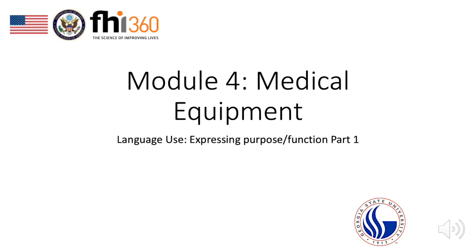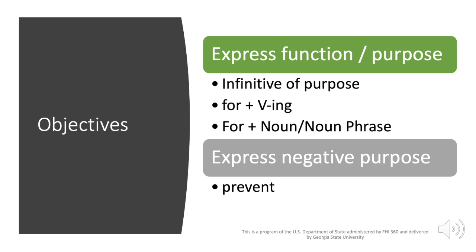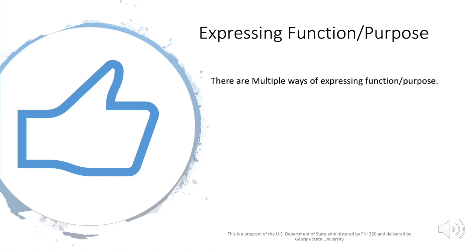Hello again. After learning about different medical equipment and instruments, let's see how you can express their functions. We want you to be able to express the functions of different medical instruments or equipment using the infinitive of purpose, 'for' plus the verb in -ing form, or 'for' plus a noun or noun phrase. We also want you to be able to express negative purpose using the verb 'prevent'.